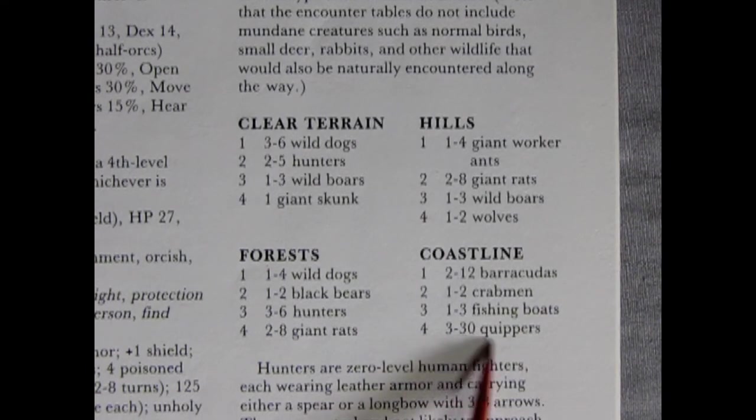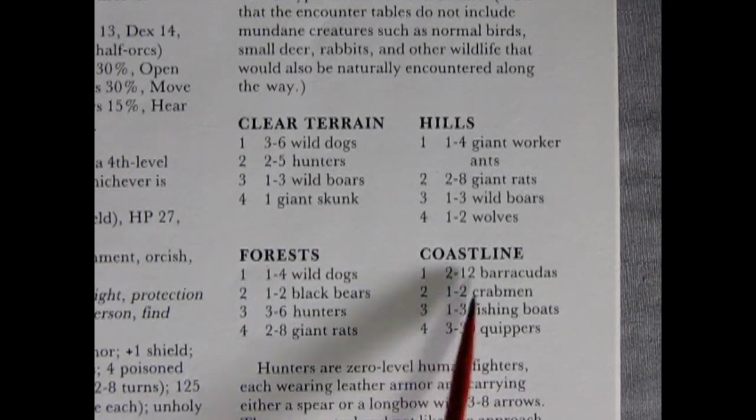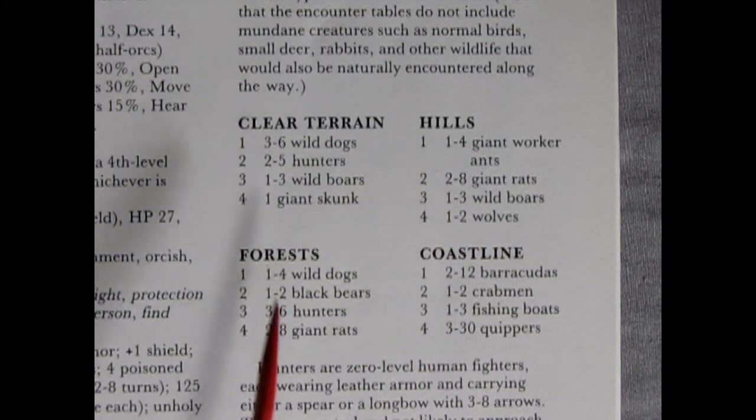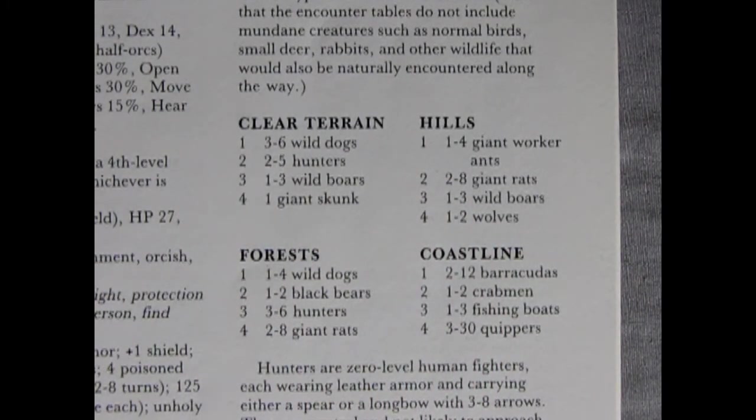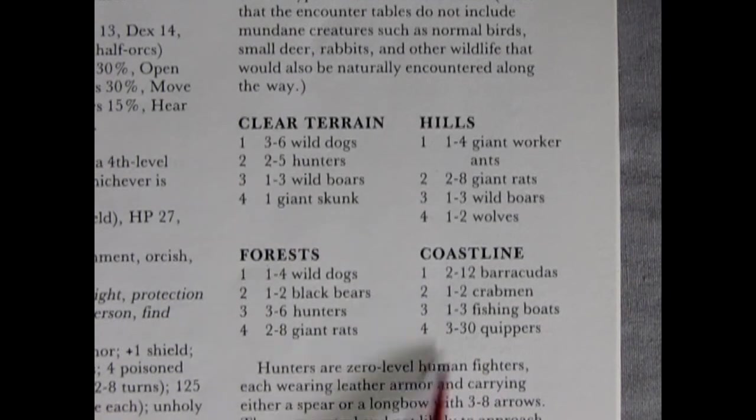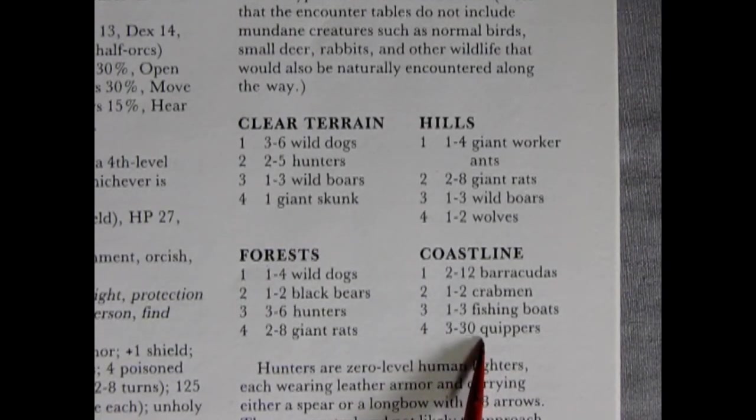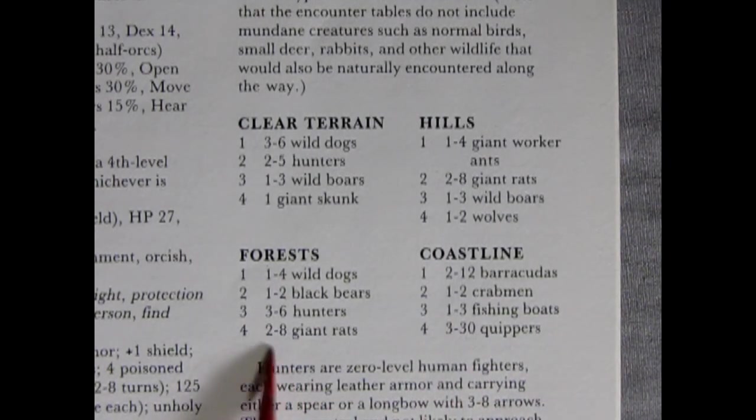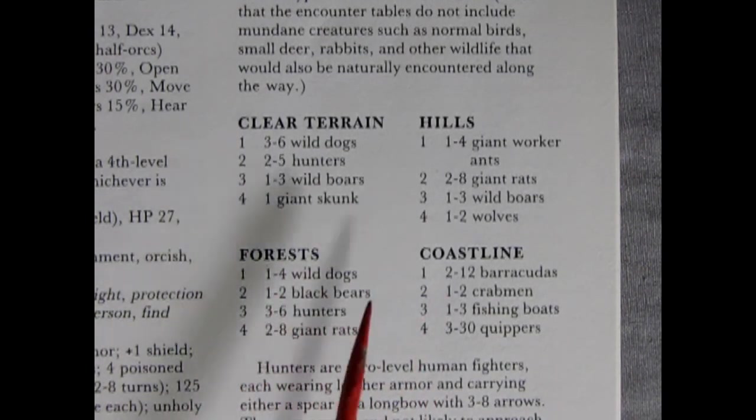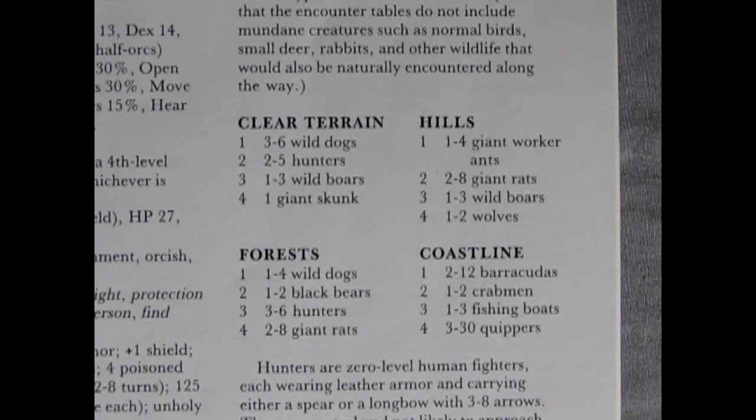Whereas in the new books, it would say, of course, 3d10 quippers, 2d4 giant rats, you know, this sort of thing. So they have simplified this in further editions. But of course, this is how this all works out.